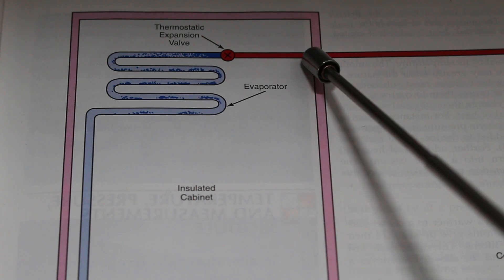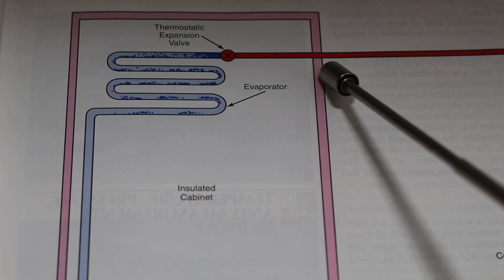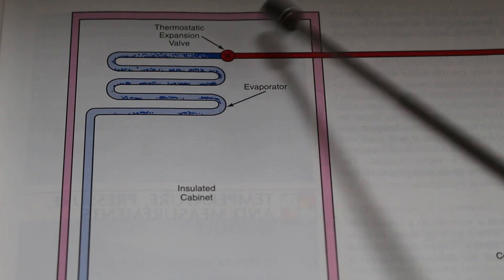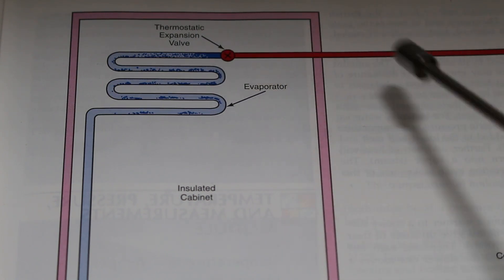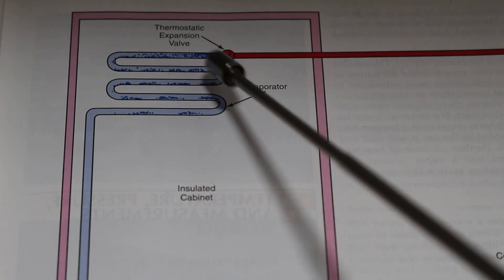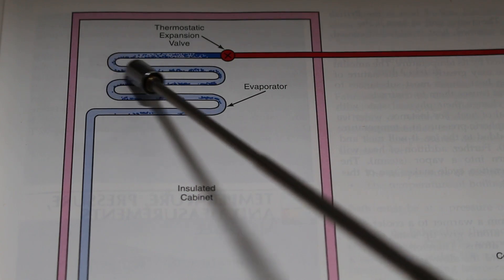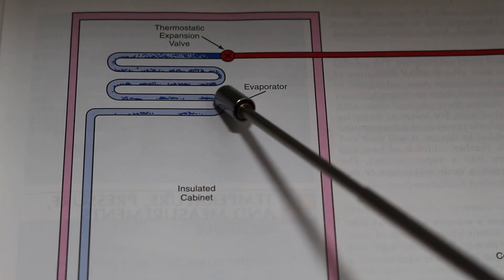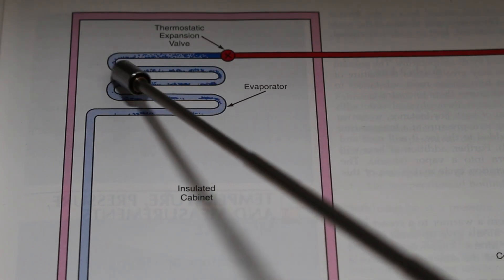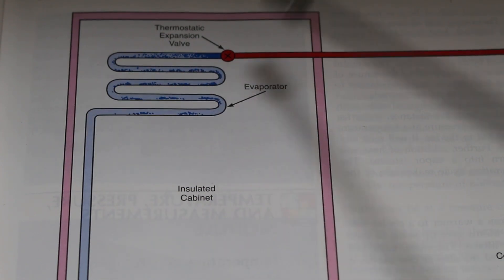If we look at the red tubing, this stands for our liquid line, which is our high pressure, high temperature, subcooled liquid leaving our condenser. And this piece here that is circular with the X in the middle is our expansion device. We have a dark blue here, and as it leaves our evaporator, we have a light blue — this is our liquid changing into a vapor. So the dark blue, we are still partially a liquid, and as we travel along our evaporator, we change state. That change of state is latent heat.